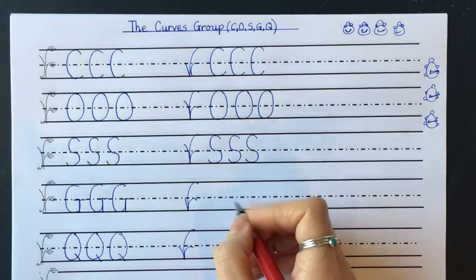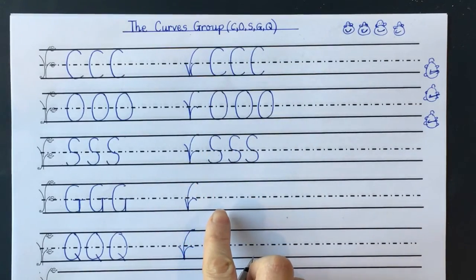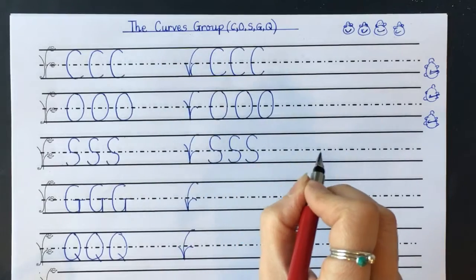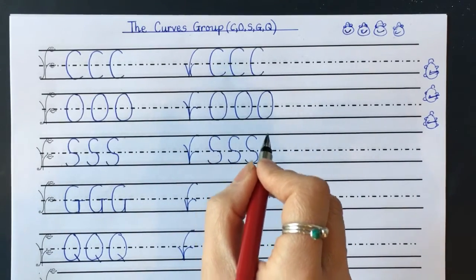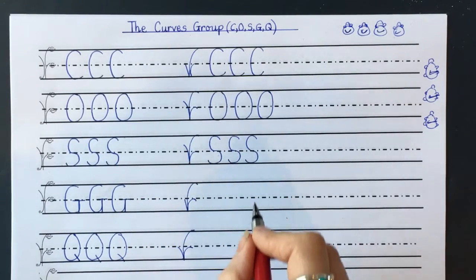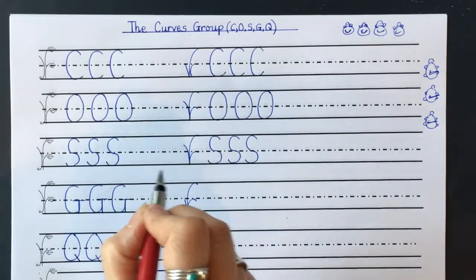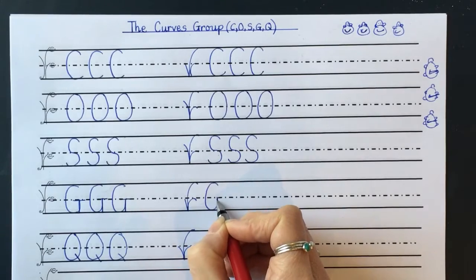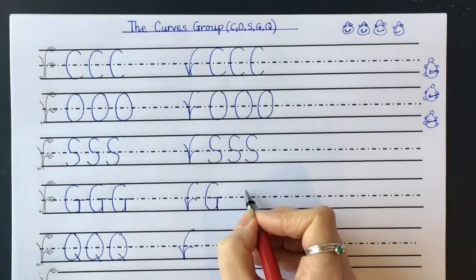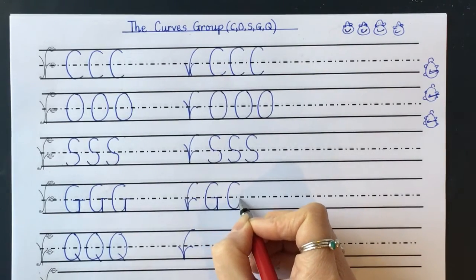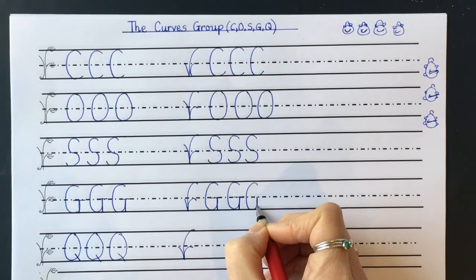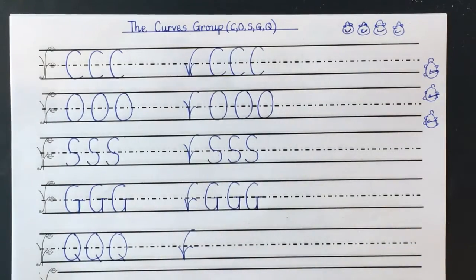Let's do the G. This is very similar to the C, but we have an extra up, down bump and a middle line. So we go: pull around and push along the ground, up, down bump, push a middle line across. Let's do my turn, your turn. Pull around, push along the ground, up, down bump, push a middle line across. If you're happy, give yourself a turtle tick. If you need a bit more practice, pause the video now.